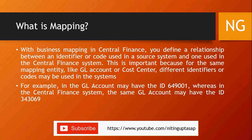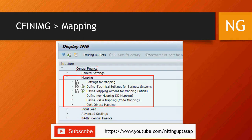What is business mapping in Central Finance? You can define a relationship between an identifier or code used in the source system and the one used in the Central Finance system. For example, GL account 649001 represents travel expenses in ECC, while the travel expense account is 343069 in S/4. The mapping ensures that a document posted on 649001 in ECC gets replicated to 343069 in S/4, while you retain visibility of the source GL.